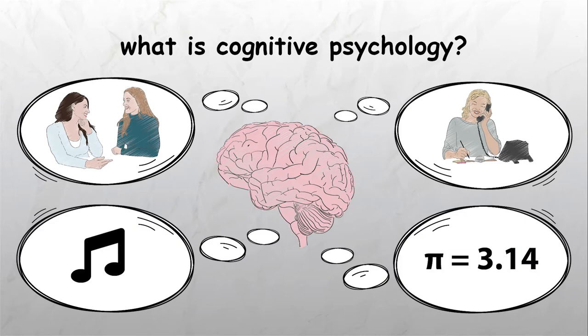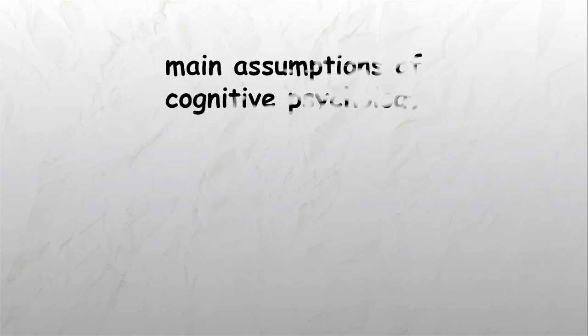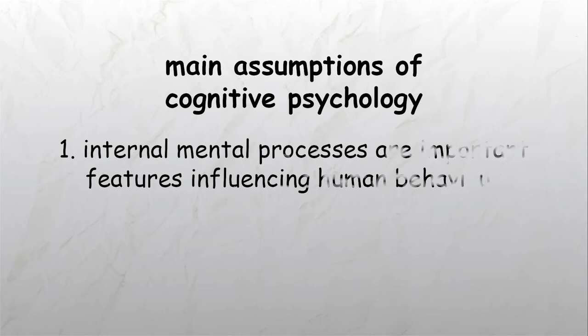Some of the main assumptions of cognitive psychology include the following. First, internal mental processes such as memory, thinking, reasoning, problem-solving, and language are important features influencing human behavior.